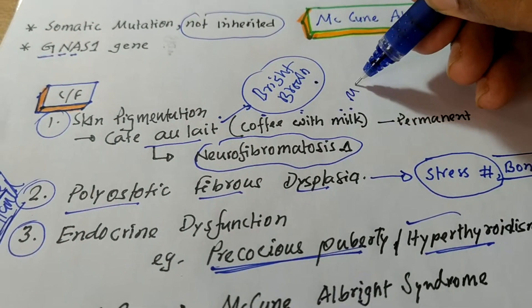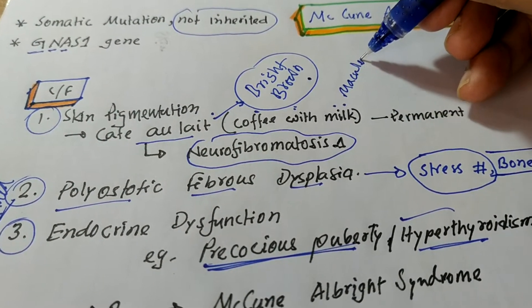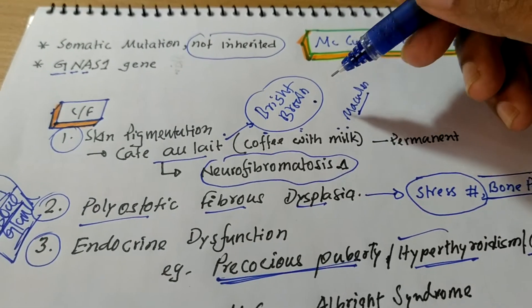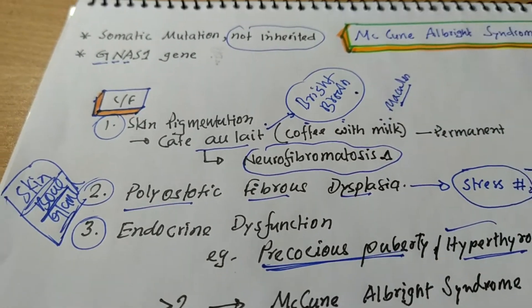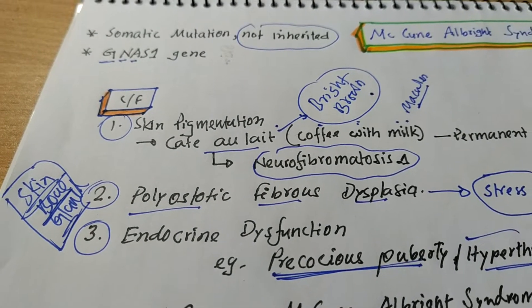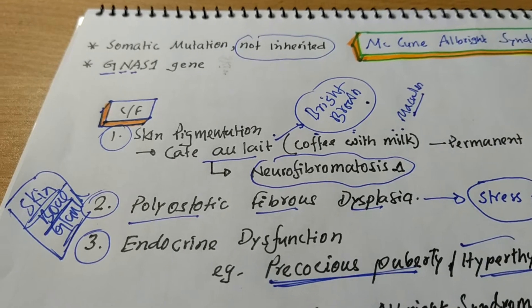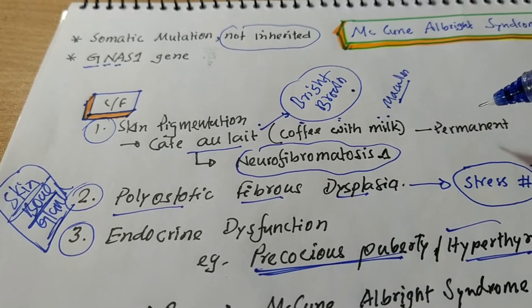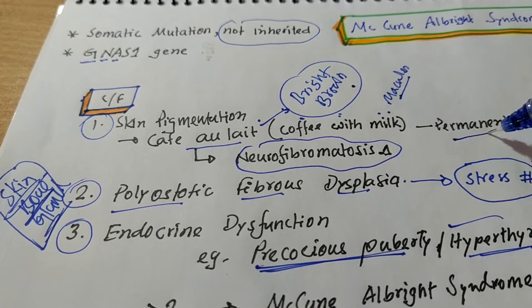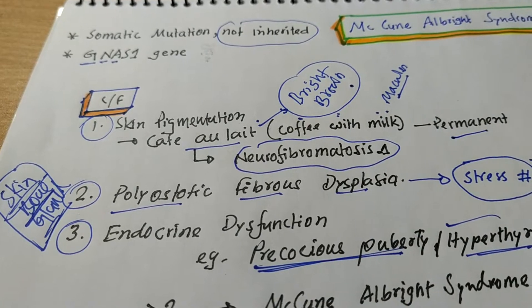It is macules, not papules or others. It is a macules type of bright brown pigmentation. And this pigmentation may be present from birth or it may appear after birth at any time. And this pigmentation is of course permanent and it may grow in size.